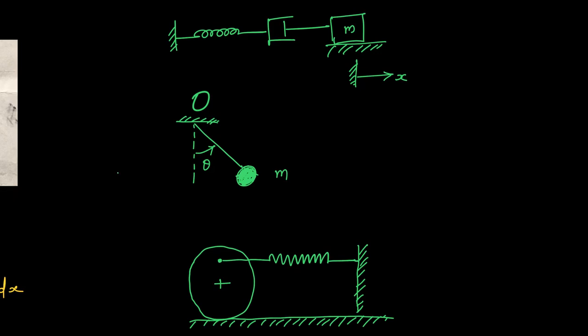In the third case, there is a disc connected to a rigid wall using a spring, but the spring is connected at an eccentric location — not at the center. In this case, the disc of mass m undergoes combined rotation and translation. So the equations of motion are different in each of these three scenarios. When you get a vibration problem, the first question to ask is: what kind of motion is my mass of interest undergoing?